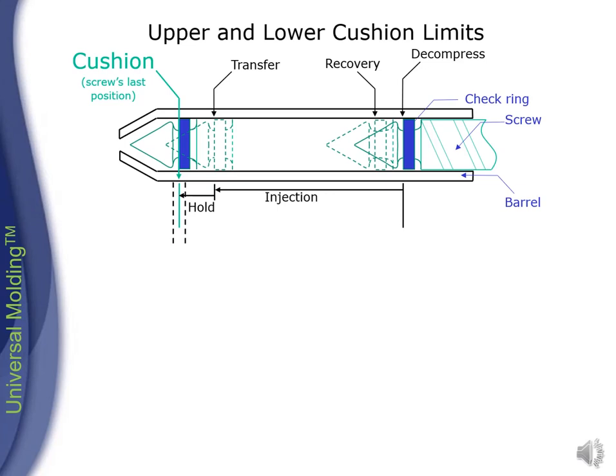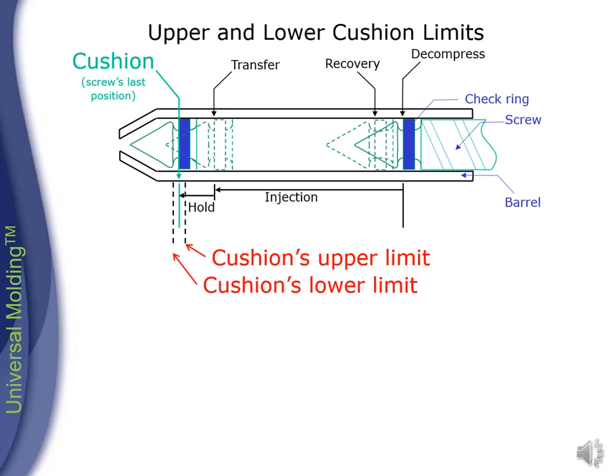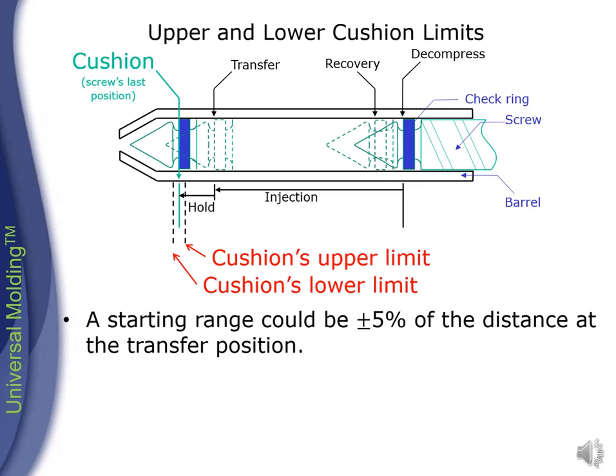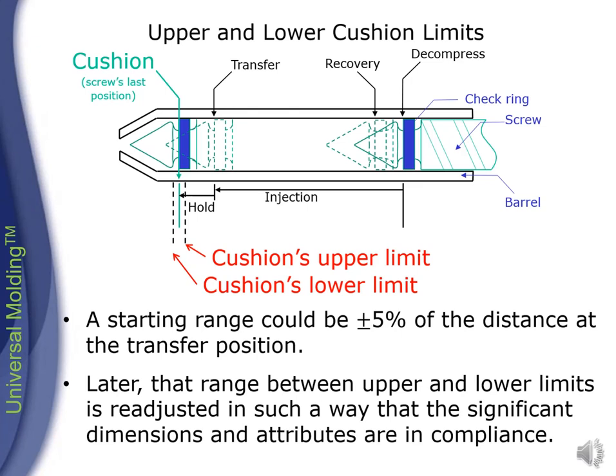Upper and lower cushion limits. The cushion is the last position of the screw. The upper limit is just above the cushion and the lower limit is just below the cushion. A starting range could be plus or minus 5 percent of the distance at the transfer position. Later, that range between upper and lower limits is readjusted in such a way that the significant dimensions and attributes are in compliance.